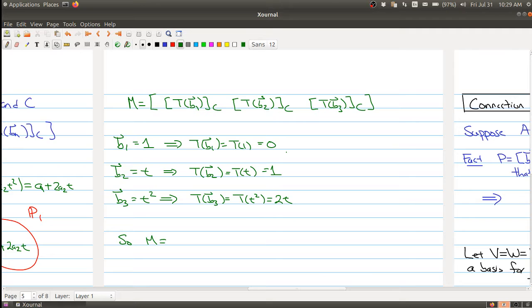Then what we need to do is notice that this is 0 + 0*t. This is 1 + 0*t. And this is 0 + 2*t. So what I'm doing here is now I'm trying to write it in terms of the basis of C.